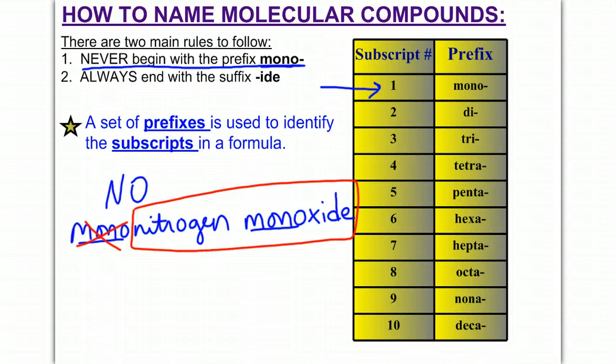The second, and you may have already noticed it, the second rule is we'll always end the final name with a suffix of ide, and that is right here at the end of my name. Notice I did not end nitrogen. It's not nitride monoxide. I only ended the last part of my name with ide.